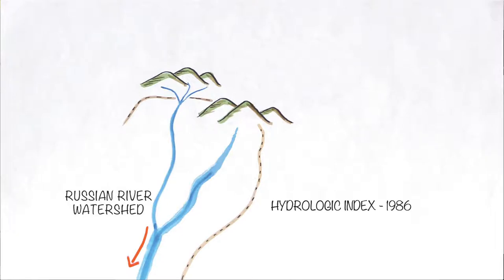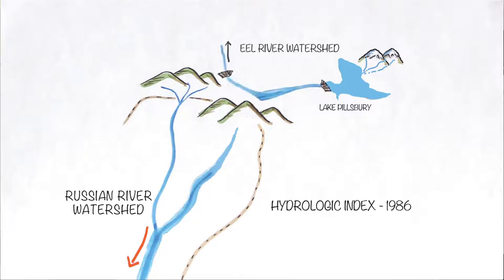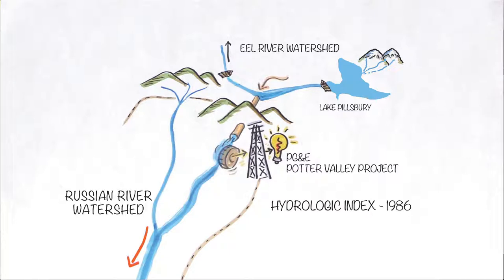It's based on the amount of rain and snow runoff and reservoir storage in Lake Pillsbury, which is located in the Eel River watershed. Pacific Gas and Electric's Potter Valley Project diverts water from the Eel River watershed through a mountain tunnel into the Russian River's East Fork to generate electricity.